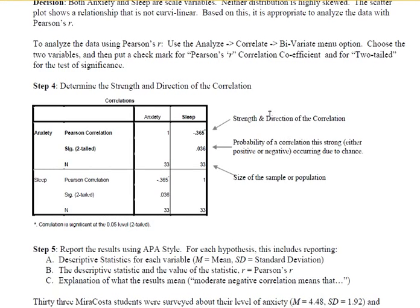So with our handout, again, you see strength and direction of the correlation. That's the negative 0.365. Probability of a correlation this strong, either positive or negative, occurring due to chance. That's 0.036. And size of the sample or population, that's 33. Since we're going to be talking about Pearson's R as a descriptive statistic right now, we're only going to focus on the strength and direction of the correlation, which is negative 0.365. So now we know the mean and standard deviation for anxiety and sleep. We have the scatter plot. And we also know Pearson's R as a way of describing the relationship between those two variables.